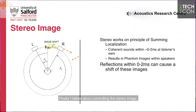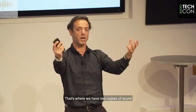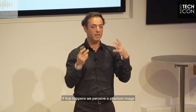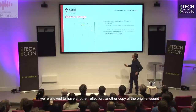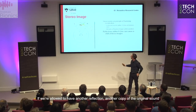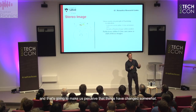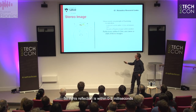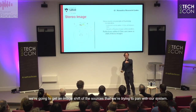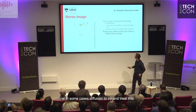Finally, controlling the stereo image. In stereo, we operate within the summing localization region — two copies of sound arriving at our ears within about one to two milliseconds, making us perceive a phantom image between the speakers rather than two separate sounds. If we allow another reflection arriving from the side walls, it interacts with our hearing system. If that reflection arrives within zero to two milliseconds, we get an image shift of the sources we're trying to pan. We can use redirection, absorption, or diffusion to treat that.